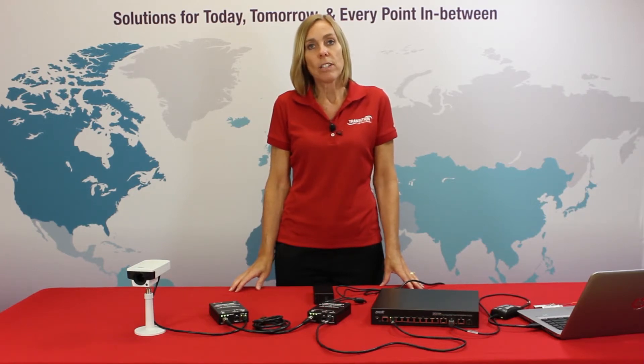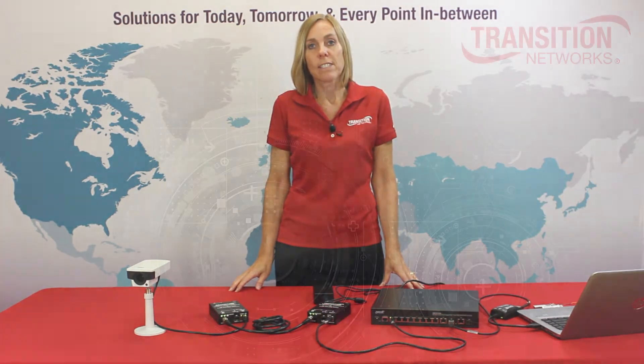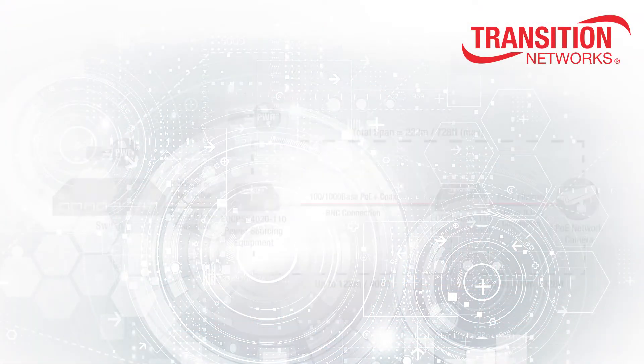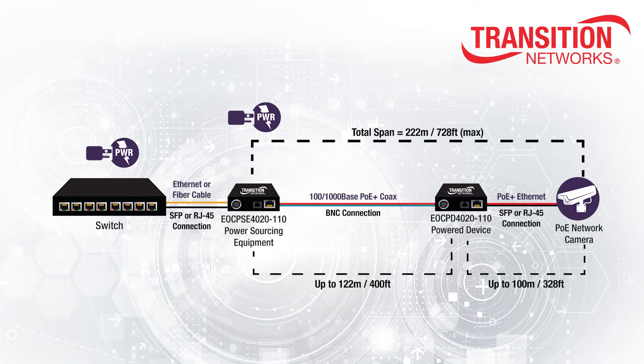Delivery of PoE has traditionally been done by installing new Cat5 or better unshielded twisted pair Ethernet cabling, which limits the power distance to 100 meters. Transition Networks' Ethernet over coax extender with PoE+ uses existing 75-ohm coaxial cabling infrastructure to extend 10/100/1000 Mbps Ethernet networks beyond the traditional 100-meter Ethernet cable limitation.